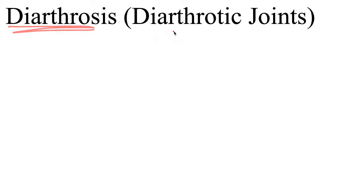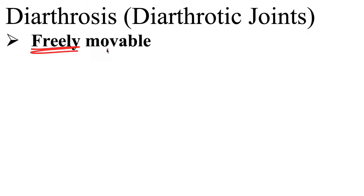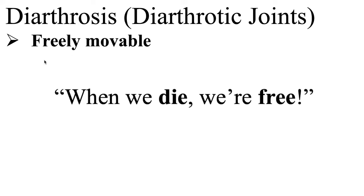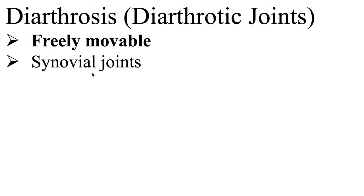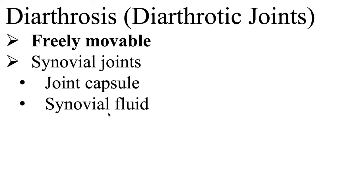Now let's check out diarthritic joints — diarthrosis, also known as diarthritic joints. These are freely movable; in other words, these joints allow for the most range of movement in the body. A way to remember diarthritic joints is that when we die, we are free — so diarthrosis joints are freely movable. All diarthritic joints are synovial joints, the most common type. Synovial joints consist of articulating bones surrounded by a joint capsule, and within the joint capsule there is synovial fluid, which reduces friction during joint movement by lubricating the joint's cavity. There are six types of synovial joints.